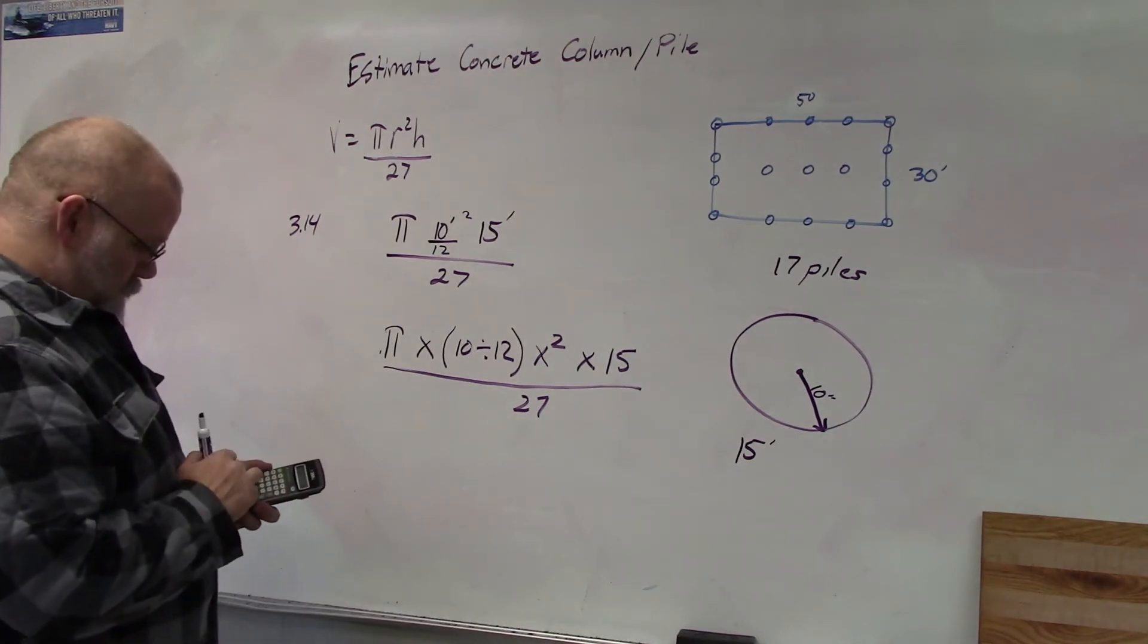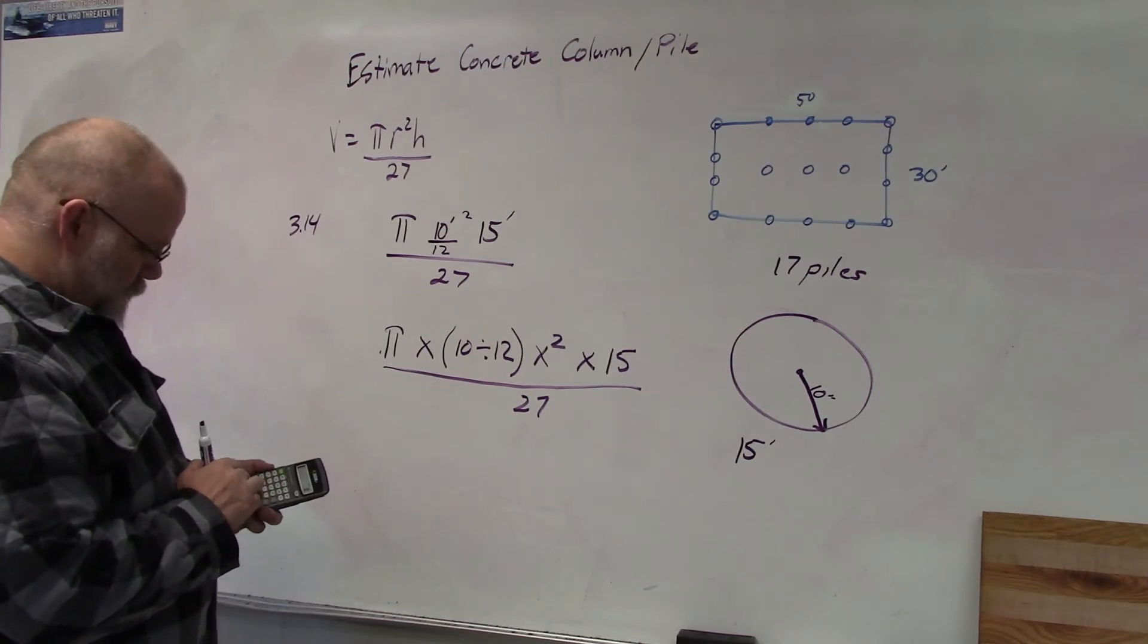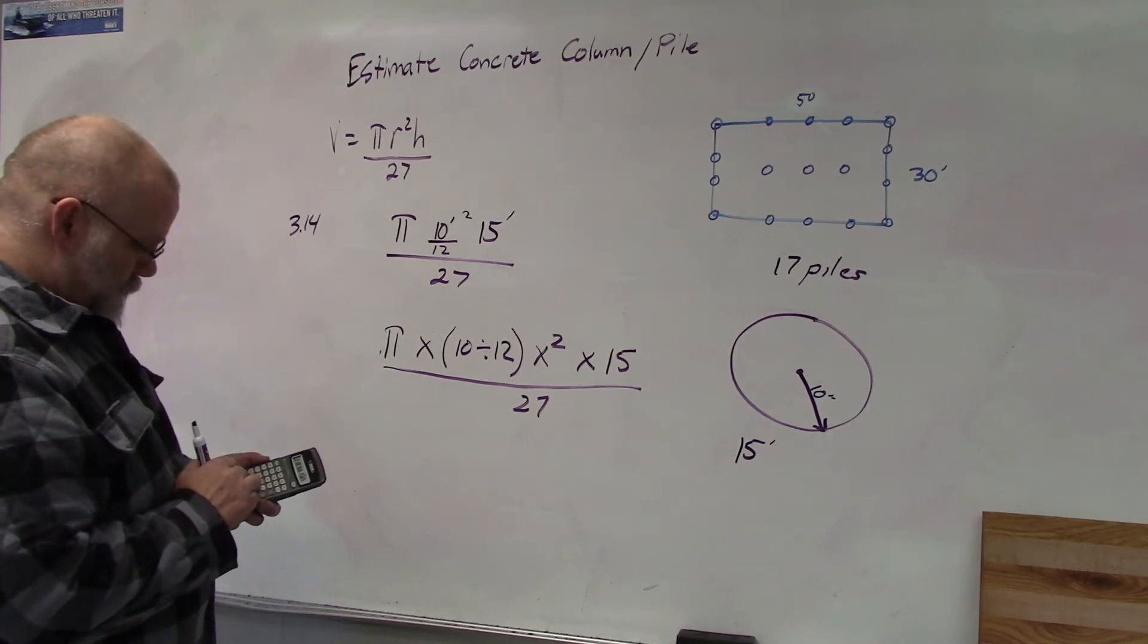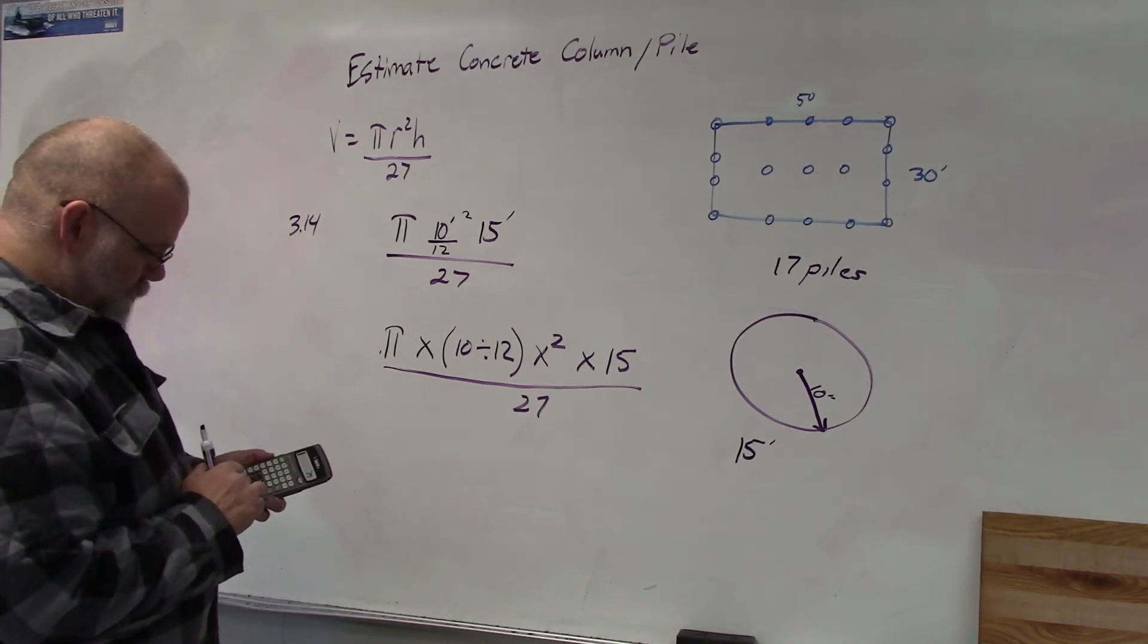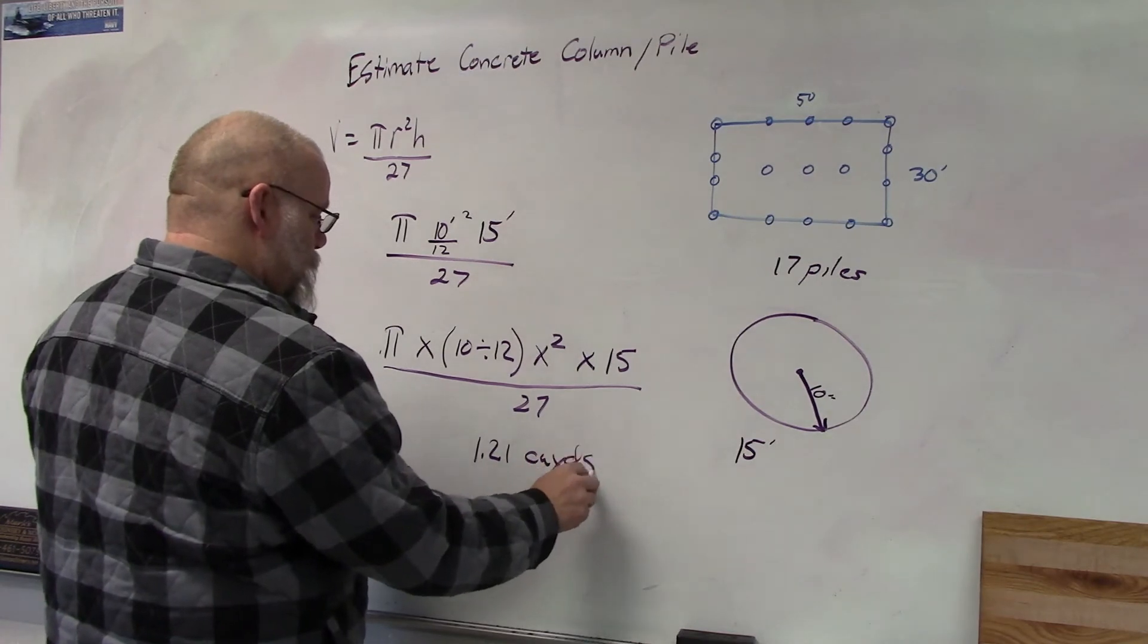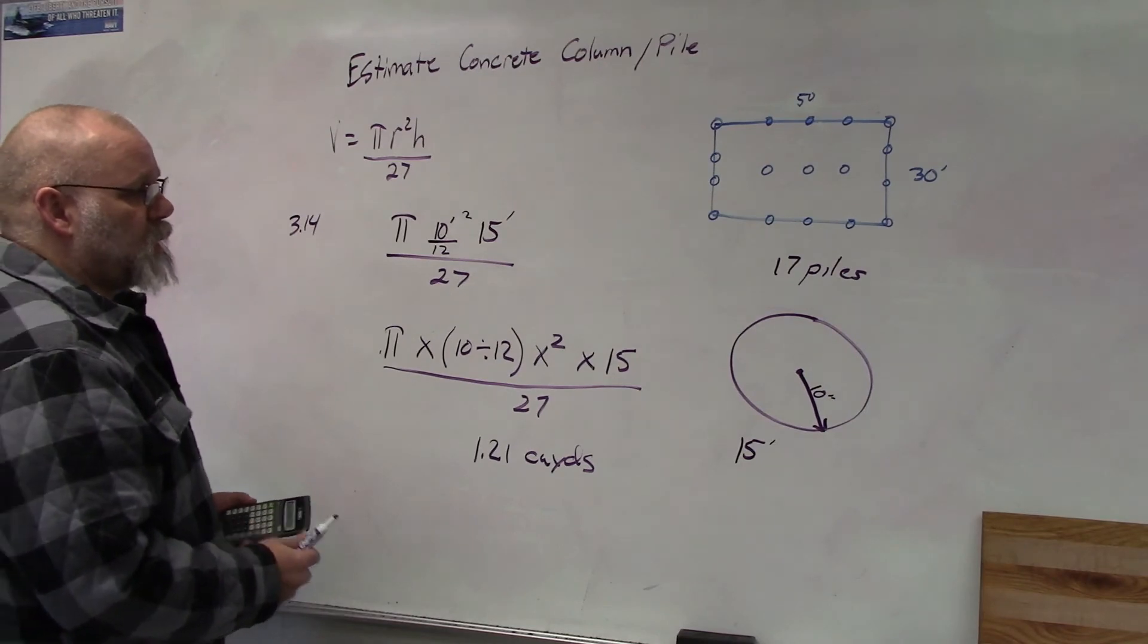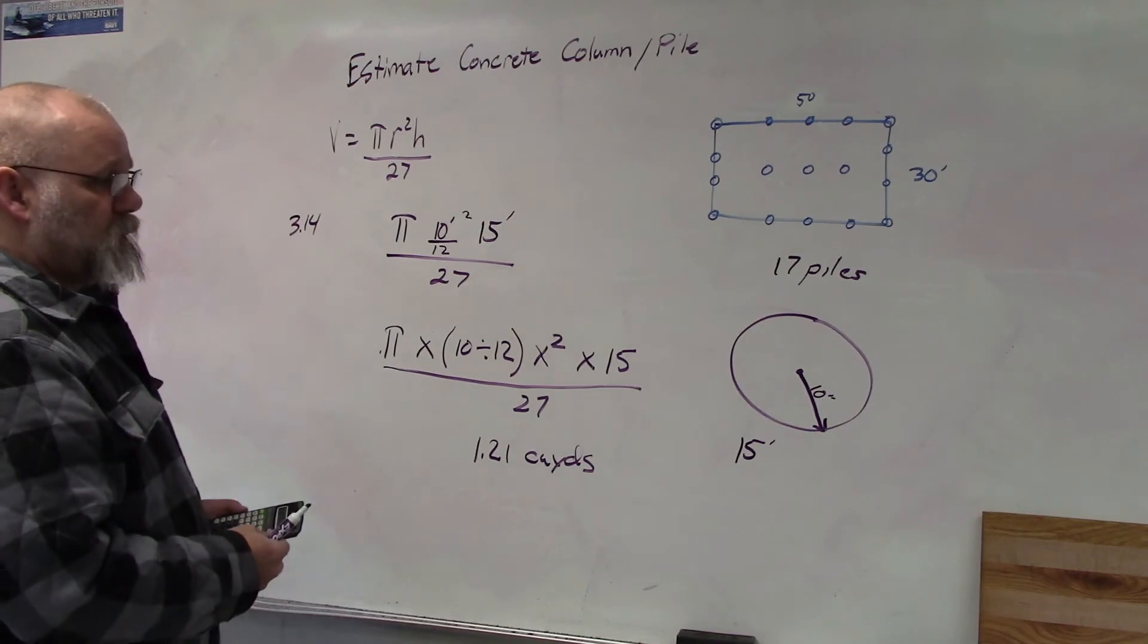So we have pi times, parentheses, 10 divided by 12, parentheses, squared, times 15, equals, divided by 27, equals, and we get 1.21 cubic yards. So that's for one 10 inch pile that's 15 feet tall.